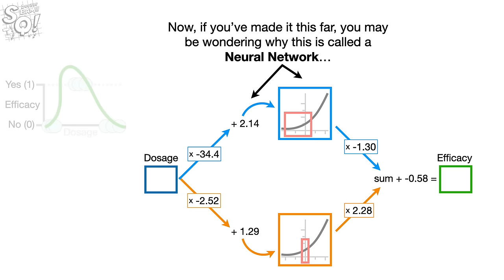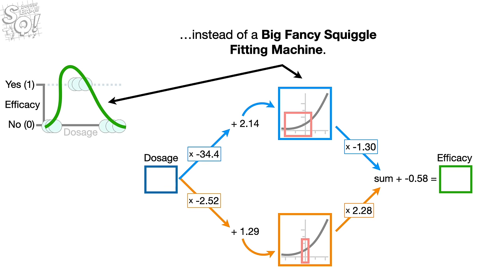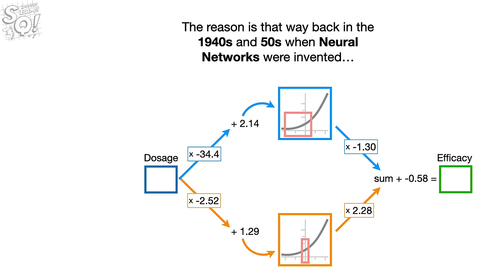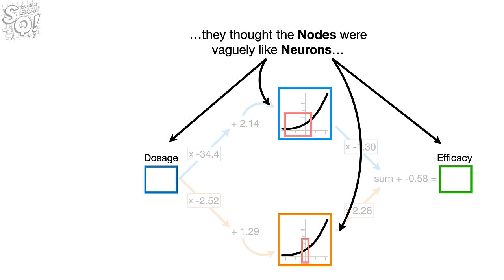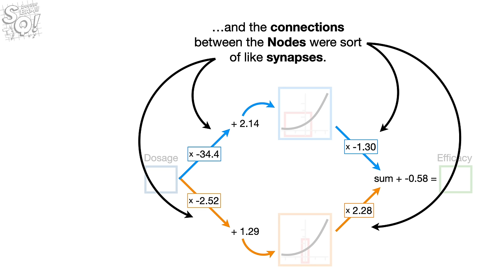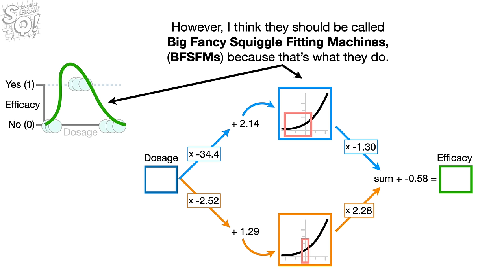If you've made it this far, you may be wondering why this is called a neural network instead of a big, fancy, squiggle-fitting machine. The reason is that way back in the 1940s and 50s, when neural networks were invented, they thought the nodes were vaguely like neurons, and the connections between the nodes were sort of like synapses. However, I think they should be called big, fancy, squiggle-fitting machines, because that's what they do.